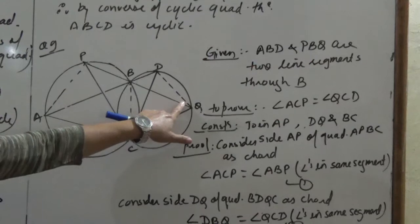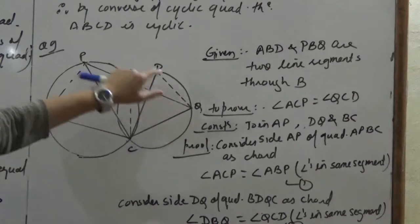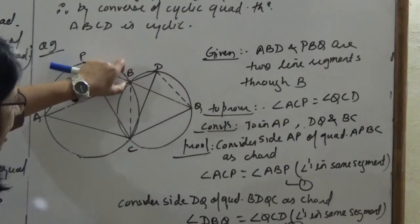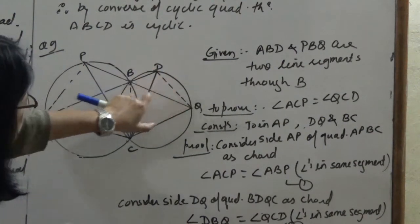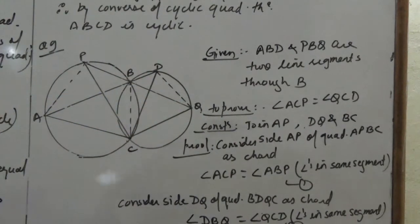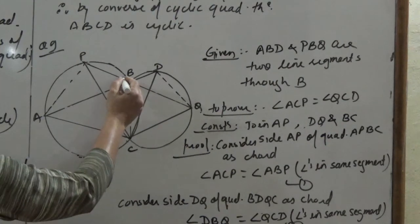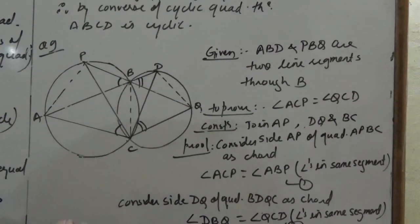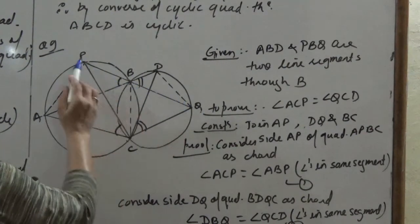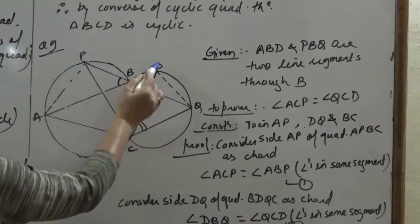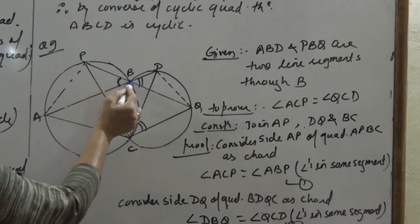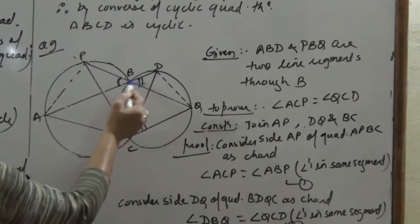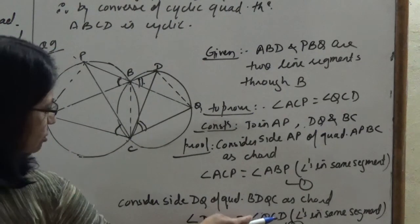Now consider side DQ of cyclic quadrilateral BDQC as a chord. By angles in the same segment, angle DBQ equals angle QCD — both subtended by chord DQ. Since PBQ and ABD are two line segments intersecting at point B, they form vertically opposite angles. Therefore angle ABP equals angle DBQ — vertically opposite angles.